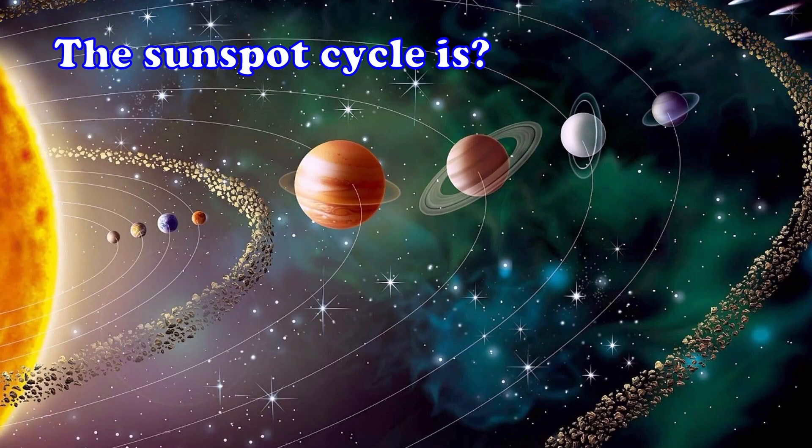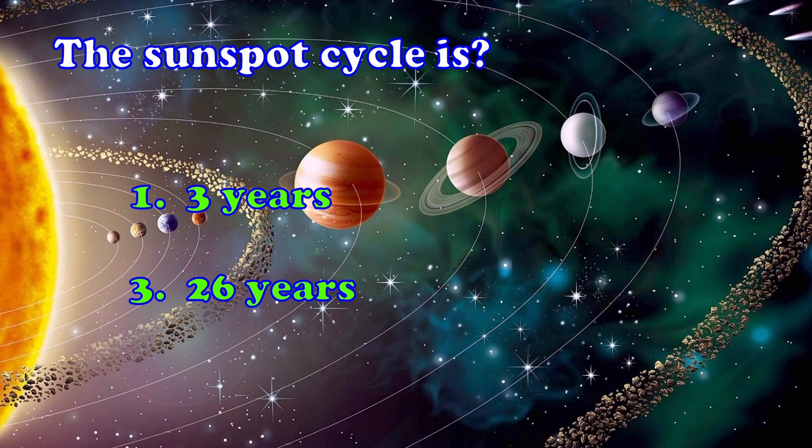The Sunspot cycle is? 1. 3 years 2. 11 years 3. 26 years.